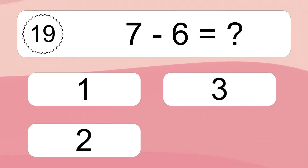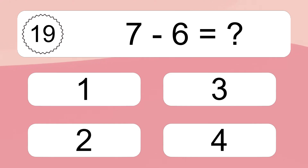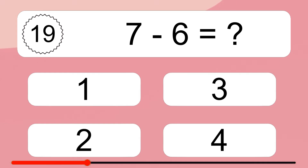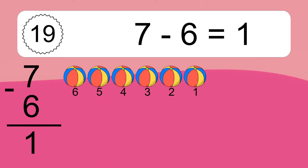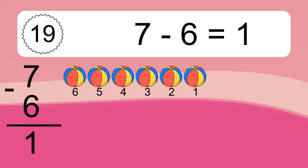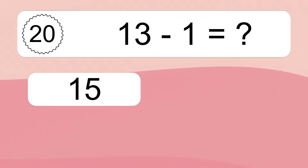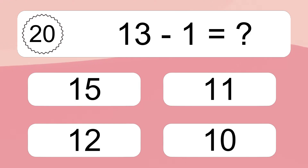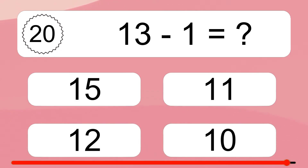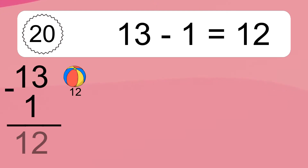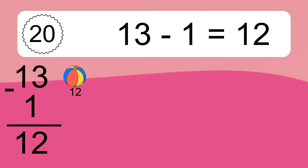7 minus 6 equals what? 7 minus 6 equals 1. Let's count it: 6, 5, 4, 3, 2, 1. 13 minus 1 equals what? 13 minus 1 equals 12. Let's count it: 12.